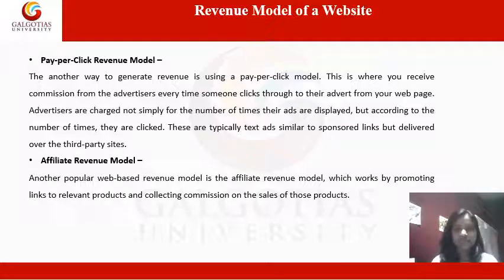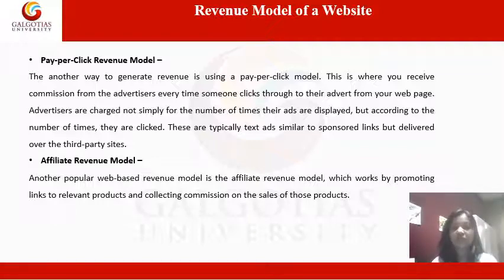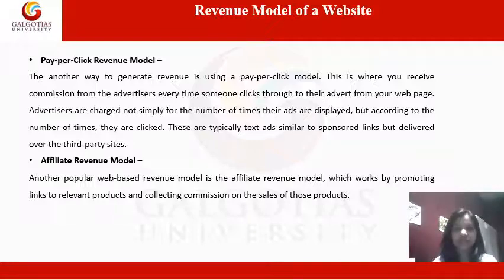The Pay Per Click revenue model is another way to generate revenue. This is where you receive a commission from the advertisers every time someone clicks through to their advert from your web page. Advertisers are charged not simply for the number of times their ads are displayed, but according to the number of times they are clicked. These are typically text ads similar to sponsored links but delivered over third-party sites.